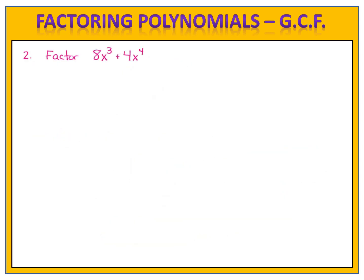In exercise 2, we want to factor the polynomial 8x to the third plus 4x to the fourth. We begin by copying the problem down and then we look at the numbers. What is the largest number that goes into both 8 and 4 evenly? The answer is 4. We divide both numbers by 4. 8x to the third divided by 4 is 2x to the third, and 4x to the fourth divided by 4 is simply 1x to the fourth.